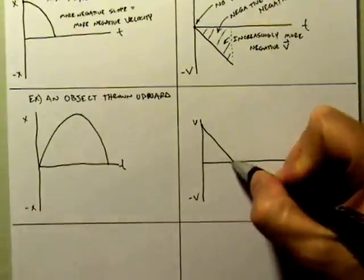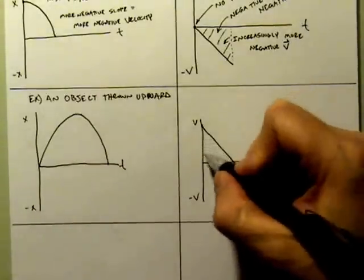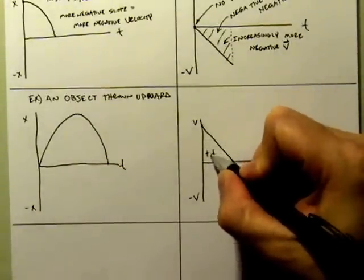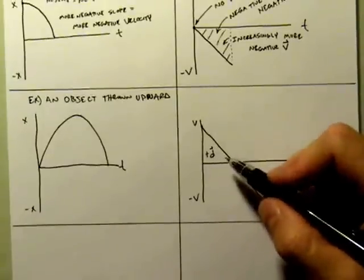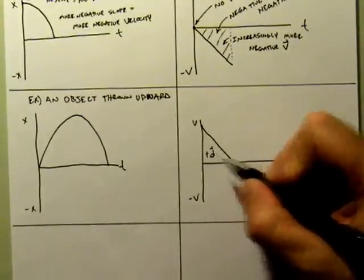So a 25 meter displacement in the positive direction. And if I calculate the area up until my velocity was 0, I will find that I have a positive displacement, or a positive delta x.